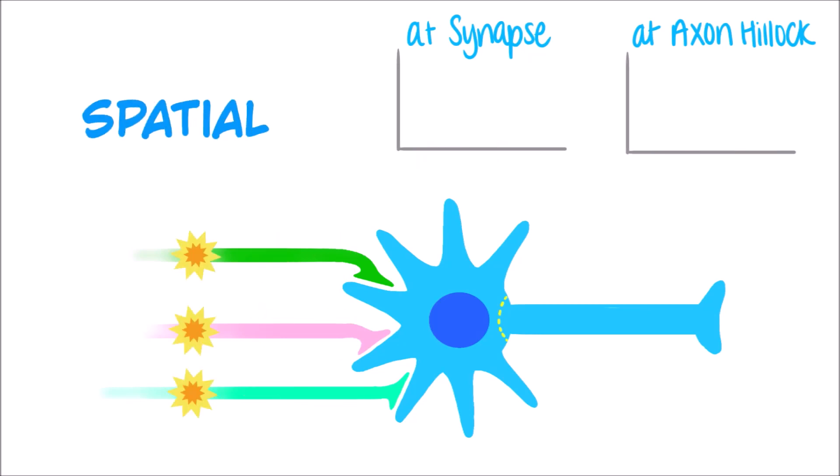Spatial summation, on the other hand, occurs when action potentials on several presynaptic neurons arrive at the postsynaptic neurons simultaneously to result in EPSPs.